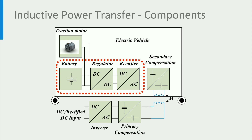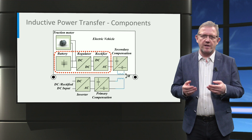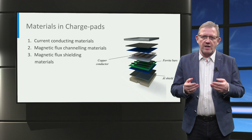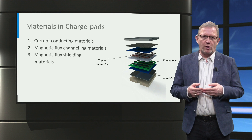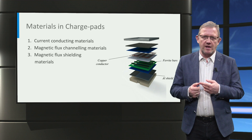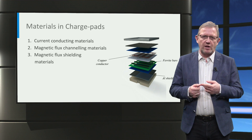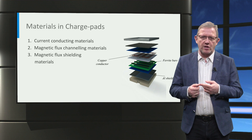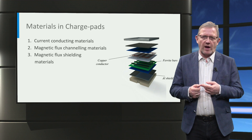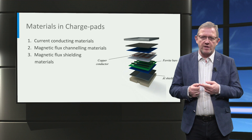On the vehicle side, AC power from the secondary coil is then rectified using an AC-to-DC rectifier and regulated using a DC-to-DC converter to charge the electric vehicle battery. A well-designed charge pad has three important components. First is the current conducting materials — typically copper wires with low resistivity, designed for high-frequency operation, are preferred. Litz wire is a special kind of copper wire that is widely used in designing charge pads; it is a spool of stranded and twisted thin wire with each strand insulated from each other.